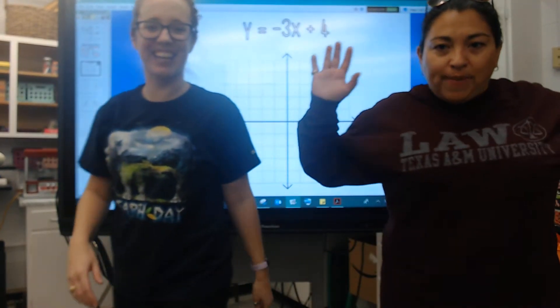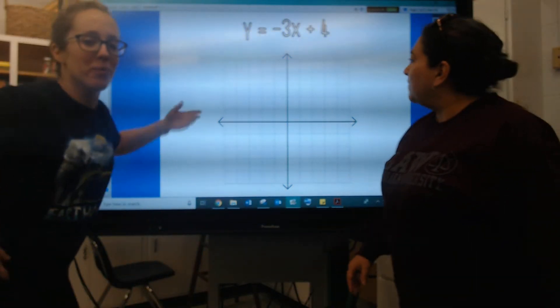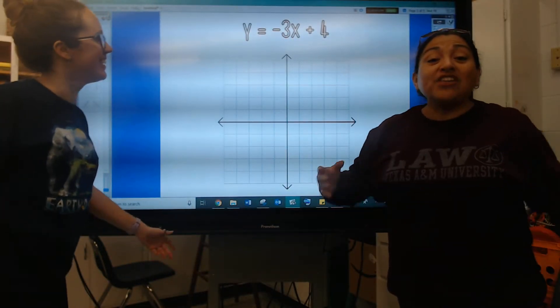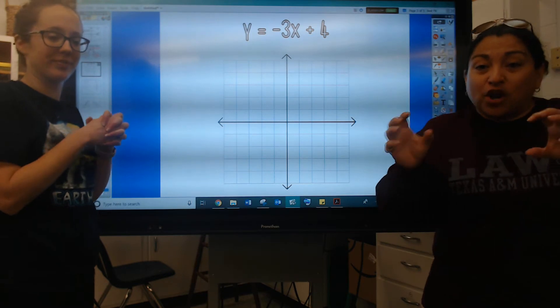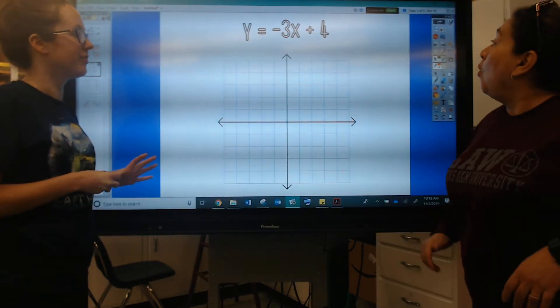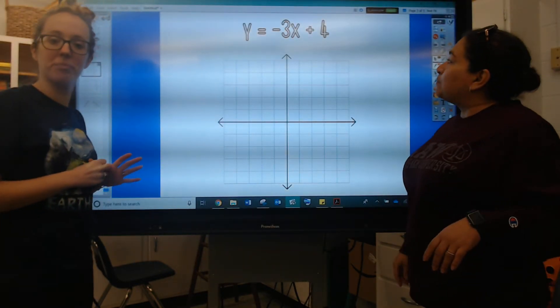We're zooming now and we're back because we're so excited. More notes. We have the equation that we just identified all the pieces to a second ago. Y equals negative 3x plus 4.